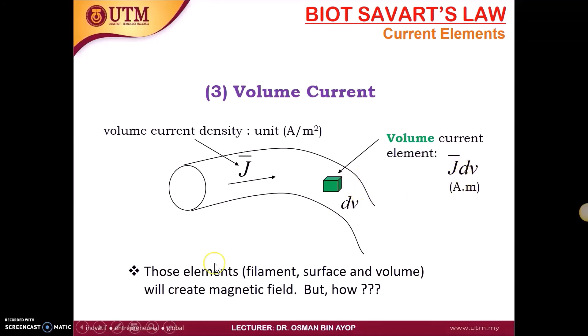Those elements — whether filament, surface, or volume — will create a magnetic field. Hopefully you still remember that for electrostatics, the line charge, point charge, surface charge, and volume charge can create the electrostatic field. The same concept applies here, where the different current elements provide the magnetostatic field.